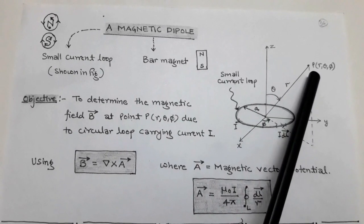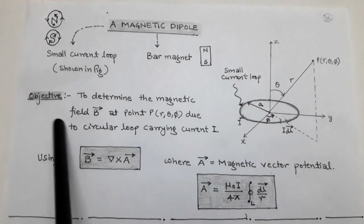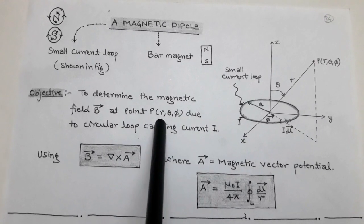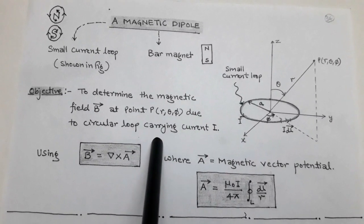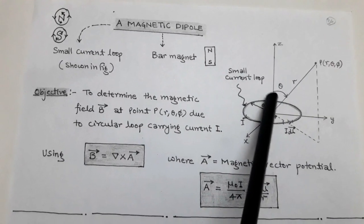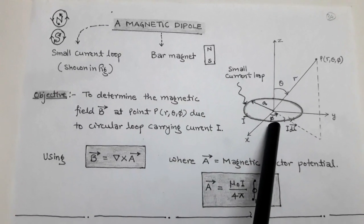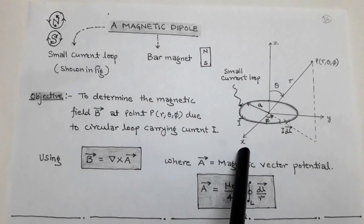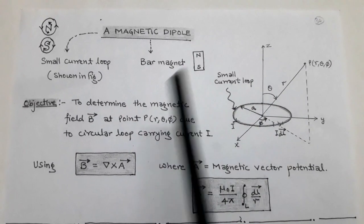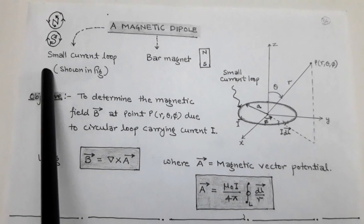Our objective is to determine the magnetic flux density B vector at some point P. Point P has coordinates r, θ, and φ in a spherical coordinate system, where r is the radius, θ is the angle the radius makes with the z-axis, and φ is the angle with respect to the x-axis. We take a magnetic dipole — a small current loop — and find B at point P.